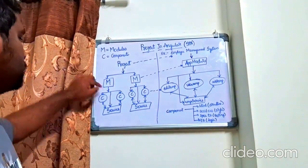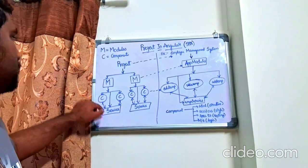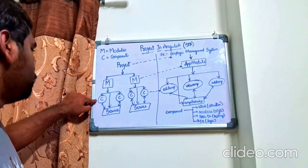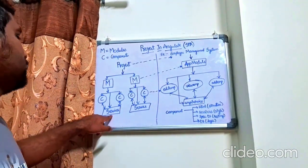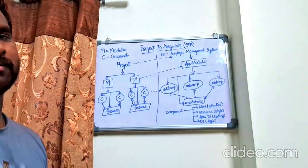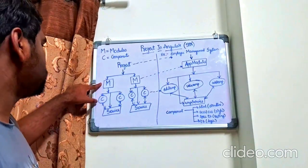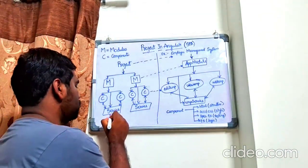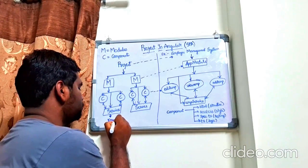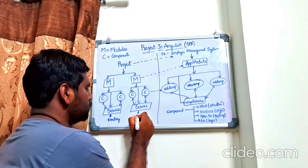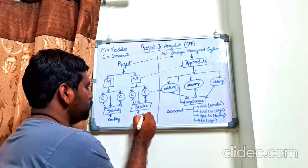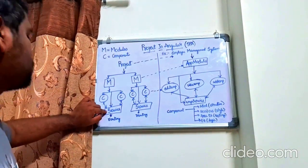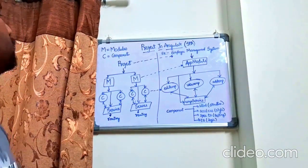One more thing — the services. These services are created when we create a module. This module helps the components to understand the server-side logic using the service. So each module consists of these components and the service, and including this, we also have another one called the routing file.